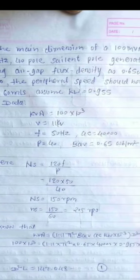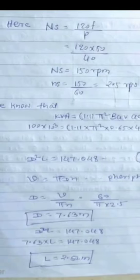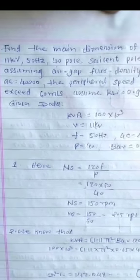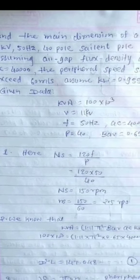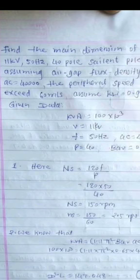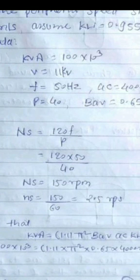We have to calculate the value of main dimensions, which is nothing but diameter and length, capital D and capital L. For that, the first step is we have to calculate the speed. Speed is not given, so we calculate NS equals 120F divided by P. Just put the value.